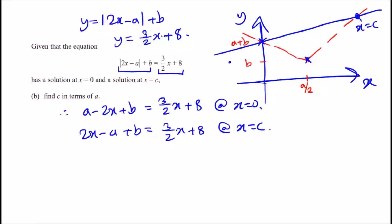Now all we do is just solve. So let's do the first one when x equals zero. We're going to have a plus b equals 8. To make c in terms of a, we should get rid of the b, so make b the subject. We can say therefore b equals 8 minus a.